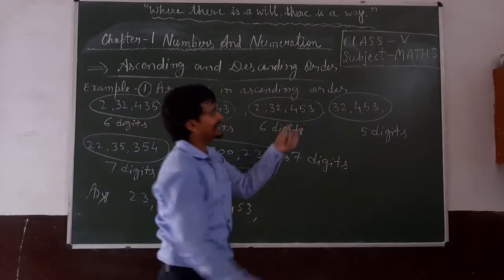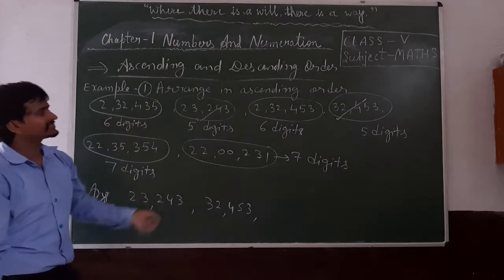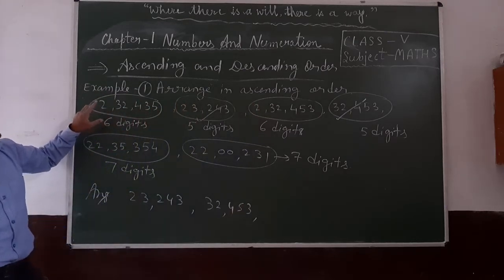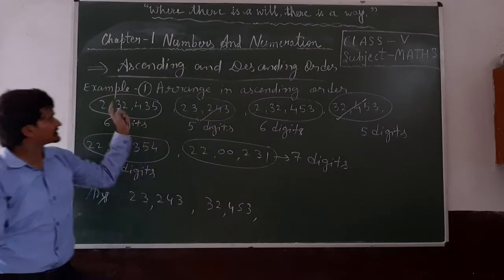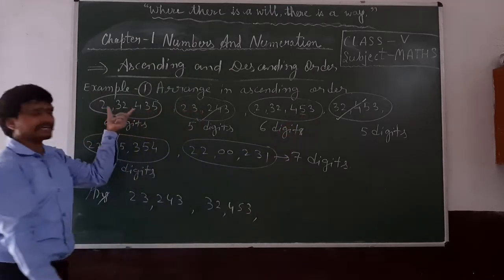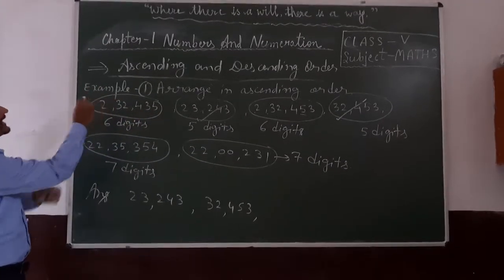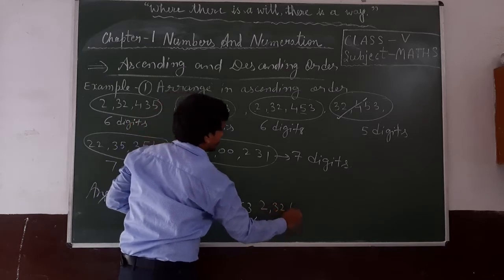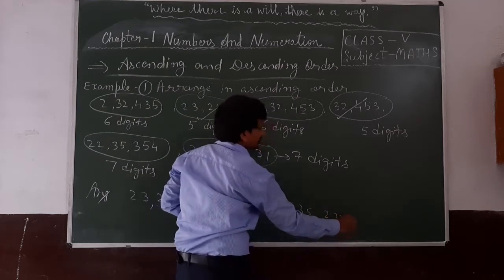Now the 5-digit numerals are complete. We will move to the numerals that have 6 digits. Comparing these two: the leftmost digits are both 2, next both 3, next both 2, next both 4 — but after this, one has 3 and the other has 5. That means the one with 3 is smaller. So we write 2,32,435 first, then 2,32,453.